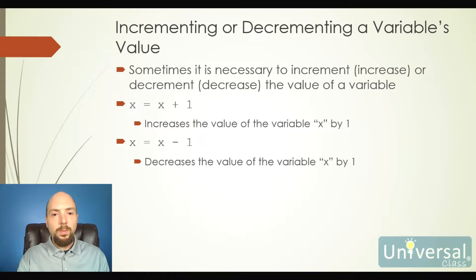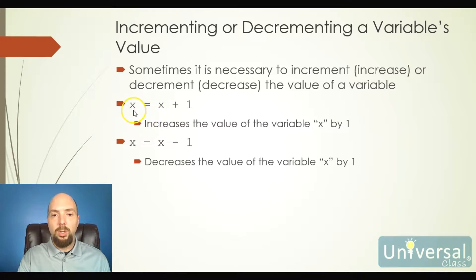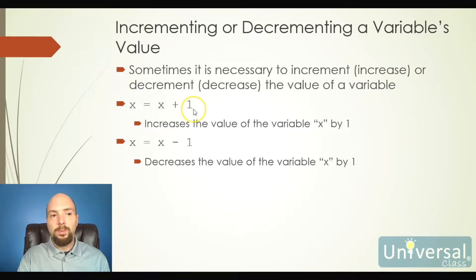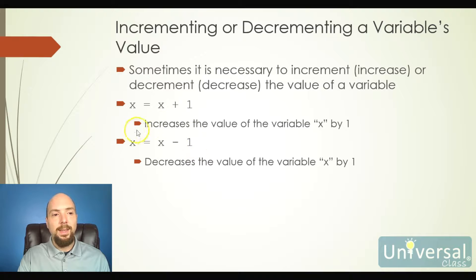If I have a variable and I want to increase or decrease its value, I can do that. To increase a value is called incrementing, and to decrease a value is called decrementing. Typically we increment or decrement by 1. For example, if x is 10, then x = x + 1 means look at x, add 1, and put the result back into x, giving us 11. Conversely, x = x - 1 gives us 9.